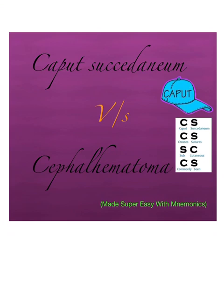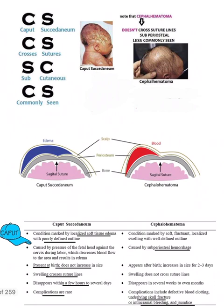I'll give you a super easy mnemonic so that you never forget which one is what. We have two terms here: one is caput succedaneum and the other one is cephalohematoma.